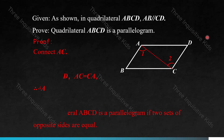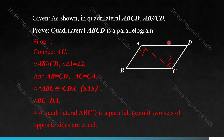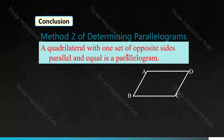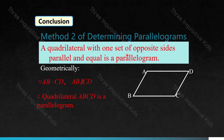We can first connect diagonal AC, creating angles 1 and 2. Because AB is parallel to CD, angles 1 and 2 are equal to each other, AB equals CD, and AC equals CA. We know that triangles ABC and CDA are congruent through SAS — side angle side. From this we know BC equals DA. Quadrilateral ABCD is a parallelogram since two sets of opposite sides are equal. Geometrically: since AB equals CD and AB is parallel to CD, therefore quadrilateral ABCD is a parallelogram.